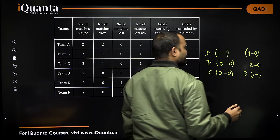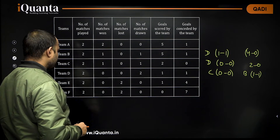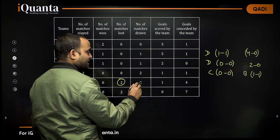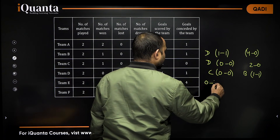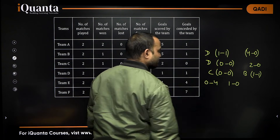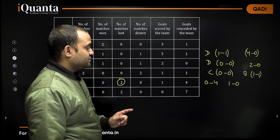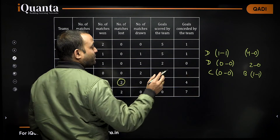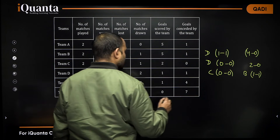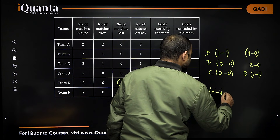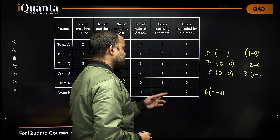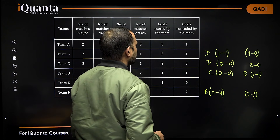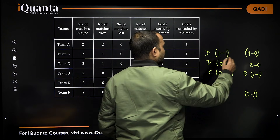Which team would that be? Team E lost both matches. If team E lost a match by 0-4, the next match score line would be 1-0, meaning team E won one match — this is not possible. That means it is team F who lost the match against B by 0-4. And team F's next match score line would be 0-3.